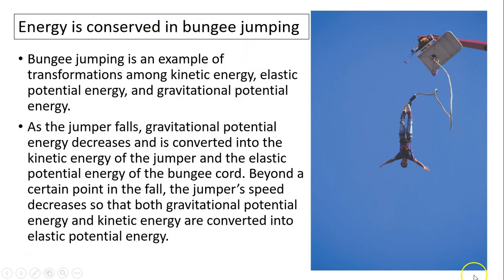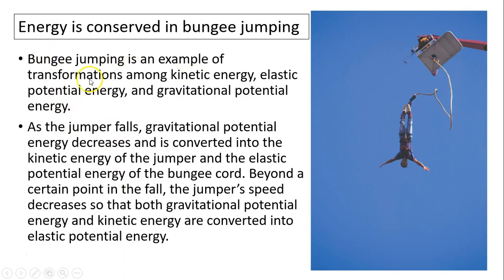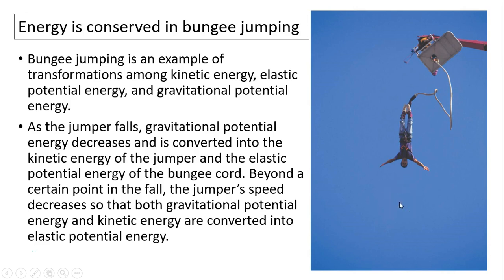Energy conservation example — a bungee jump. As a person bungee jumps, the only forces doing work are the elastic force of the bungee cord and gravity. So bungee jumping is an example of transformation among kinetic, elastic potential, and gravitational potential energy. Initially the person has gravitational potential energy; as the person falls, that converts to kinetic energy. Eventually when the bungee cord is fully stretched, that energy converts to elastic potential energy — the whole process is energy transformation.